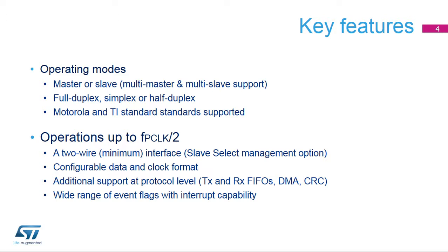The communication speed can't exceed half of the internal bus frequency, and a minimum of two wires is required to provide the serial data flow synchronized by clock signal in a single direction. An optional hardware slave select control signal can be added. The data size and transmit shift order are configurable, as well as the clock signal polarity and phase, or polarity and timing adjustment of the slave select signal. At the protocol level, the user can use specific data buffers with an optional automatic cyclic redundancy check, or CRC calculation, and transfers through the DMA controller. There are a wide range of SPI events that can generate interrupt requests.